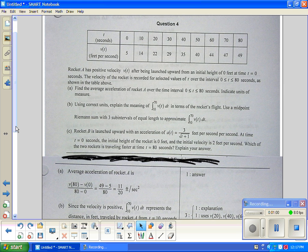That's just one point. So give yourself a point for that with correct units. Explain the meaning of the integral from ten to seventy of V of T, DT in terms of the rocket's flight. Then use a midpoint Riemann sum of three subintervals of equal length to approximate that integral.